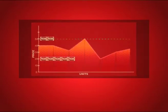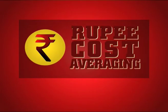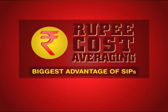This helps to lower the average purchase cost of units over longer periods of time as the market goes through multiple bull and bear phases. This is called rupee cost averaging, which is also the biggest advantage of SIP.